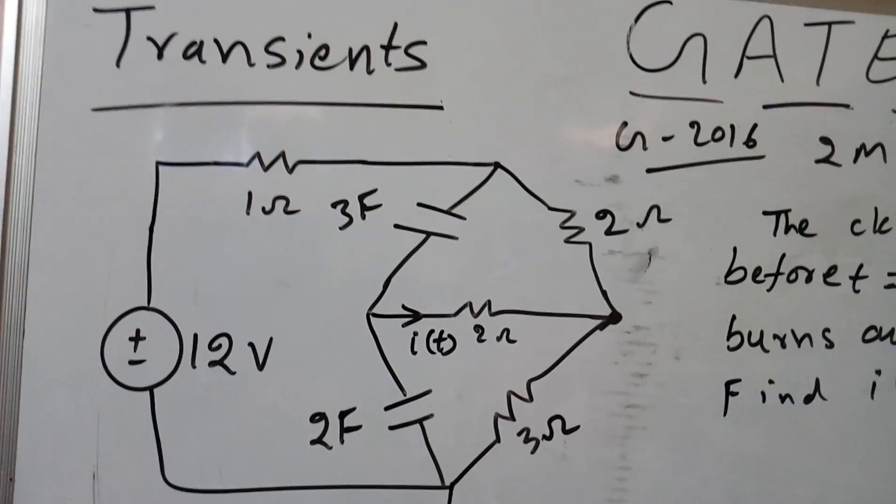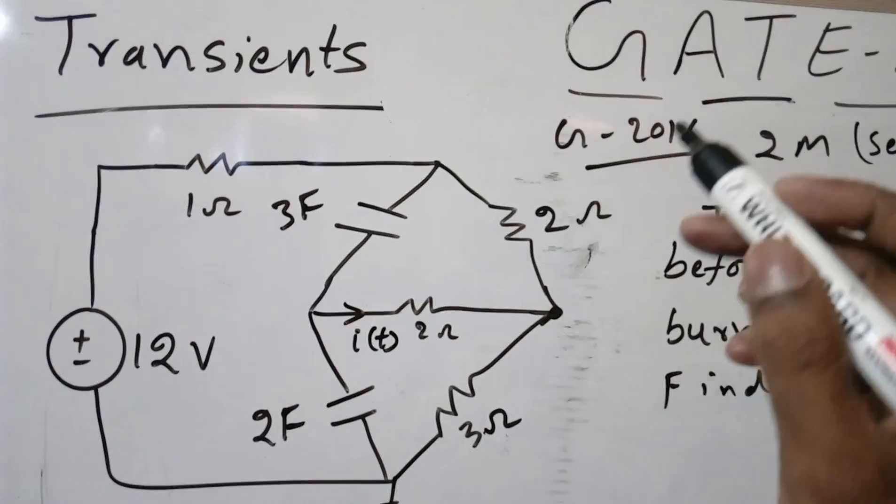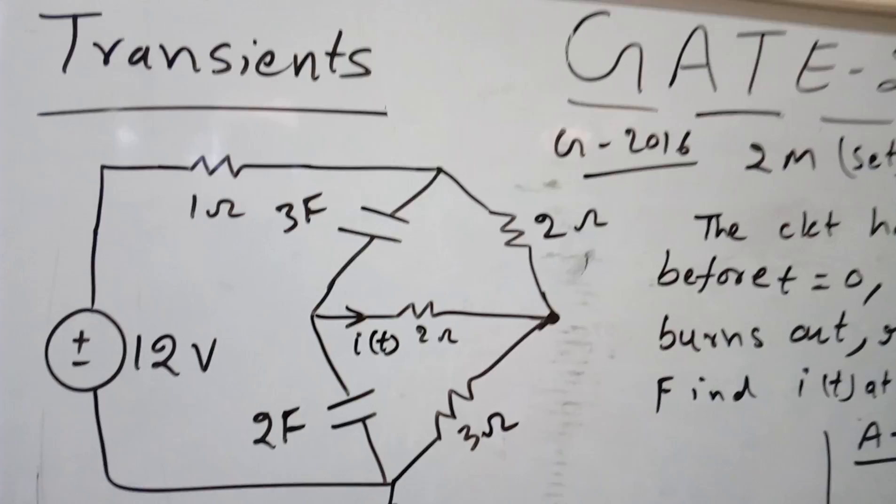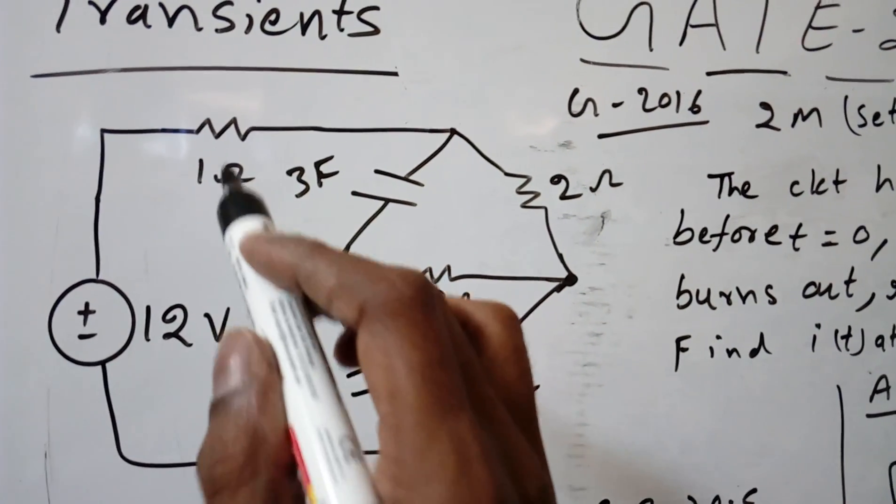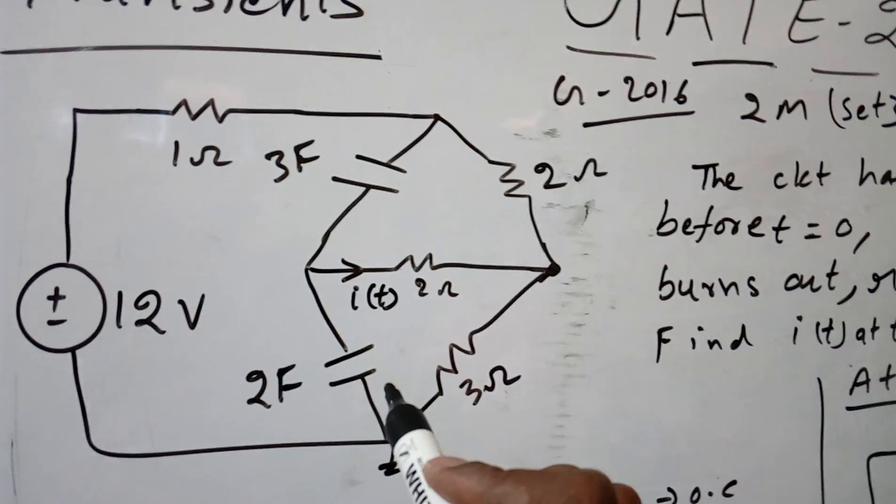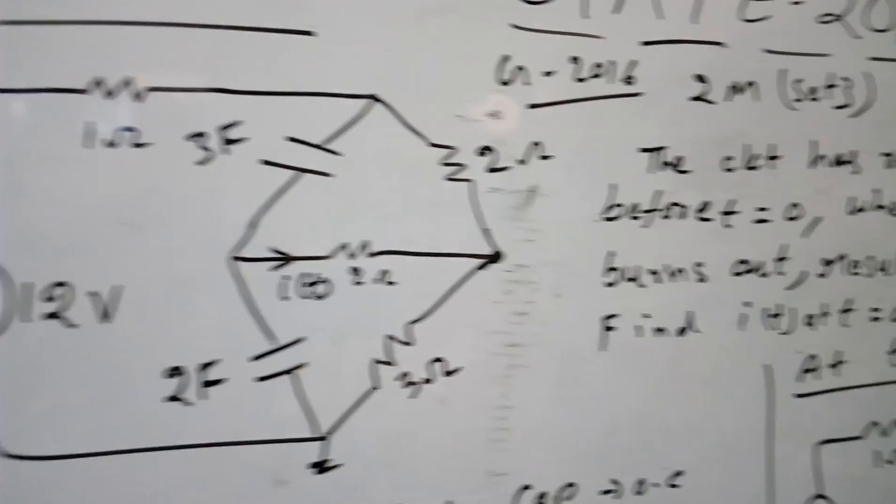Now in this lecture I am going to solve one previous GATE problem which came in 2016 transient analysis. So this is the question: given 12 volts, 12 ohm, 1 ohm, 2 capacitors are given and 3 resistances are given.